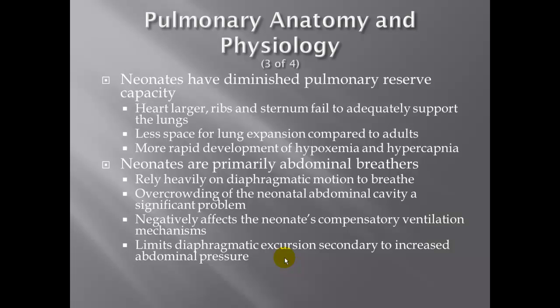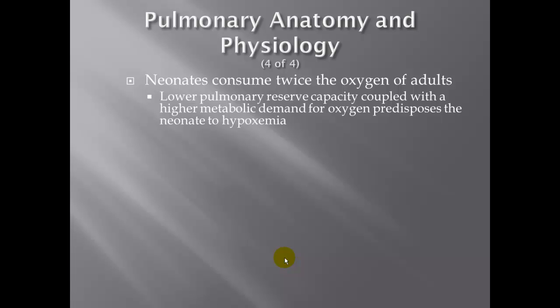Neonates have diminished pulmonary reserve capacity. Their heart is larger, and the ribs and sternum fail to adequately support the lungs, leaving less space for lung expansion compared to adults, with more rapid development of hypoxemia and hypercapnia. Neonates are primarily abdominal breathers, relying heavily on diaphragm motion. Overcrowding of the abdominal cavity negatively affects the compensatory ventilation mechanism and limits diaphragmatic excursion secondary to increased abdominal pressure. If air has been blown into the stomach, run an oral gastric tube and pull all the air out. Neonates consume twice the oxygen of adults, predisposing them to hypoxemia.